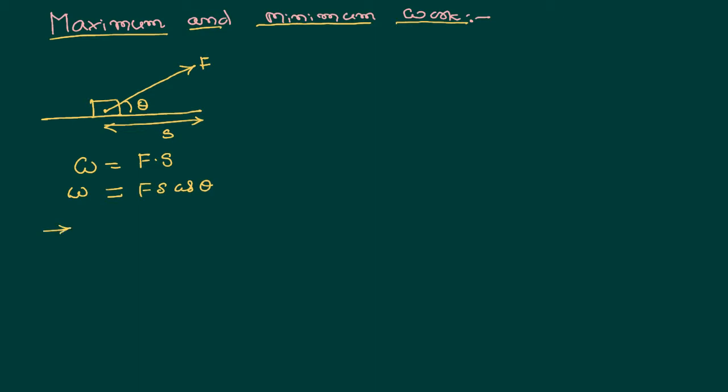Suppose you are pulling the body with a zero angle, that means you are applying the force in a horizontal way. Then what happens?